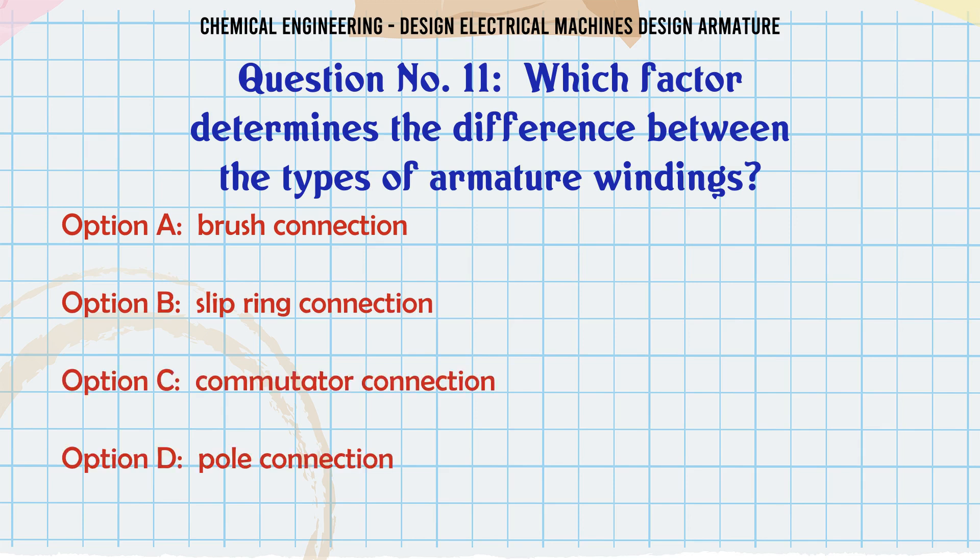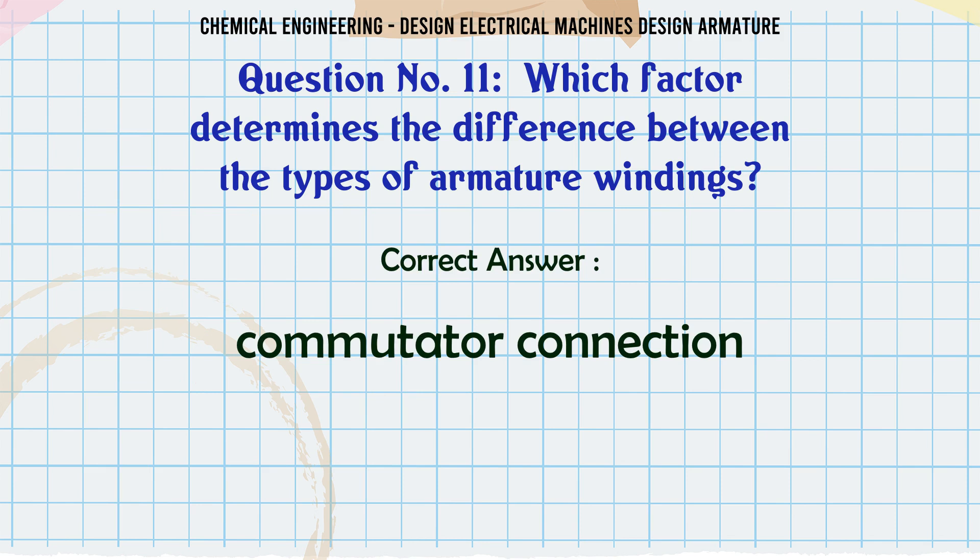Which factor determines the difference between the types of armature windings? Options: A) Brush connection, B) Slip ring connection, C) Commutator connection, D) Pole connection. The correct answer is Commutator connection.